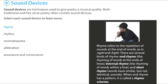Sound devices are techniques used to give poetry a musical quality. Both traditional and free verse poetry often contain sound devices. These include rhyme, rhythm, onomatopoeia, alliteration, assonance, and consonance.